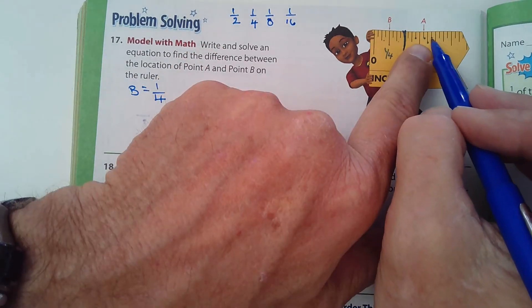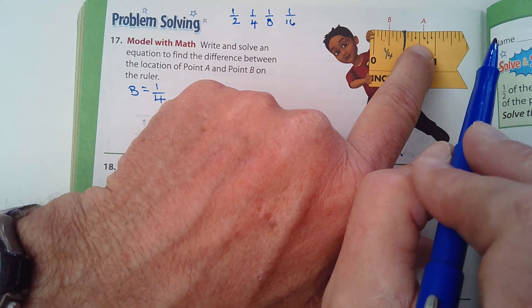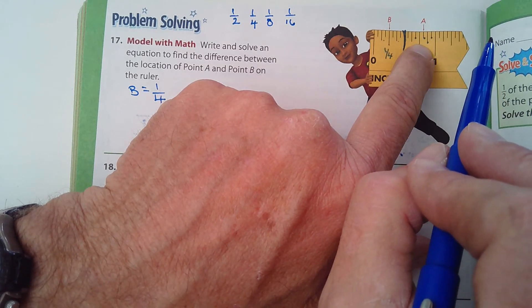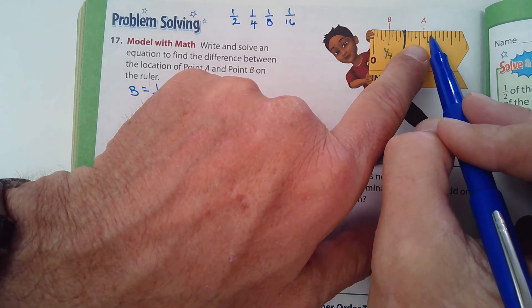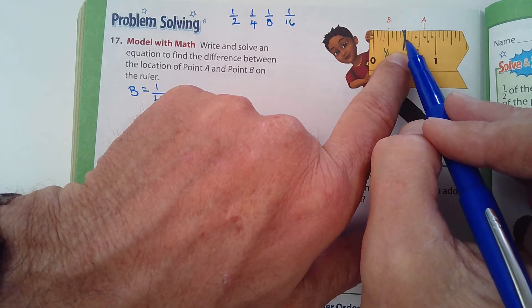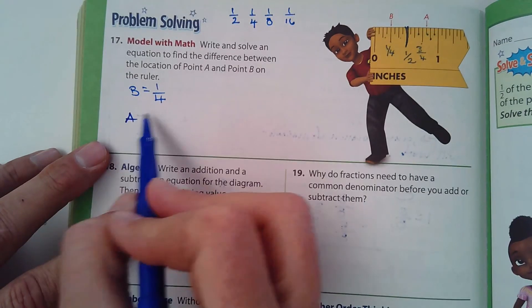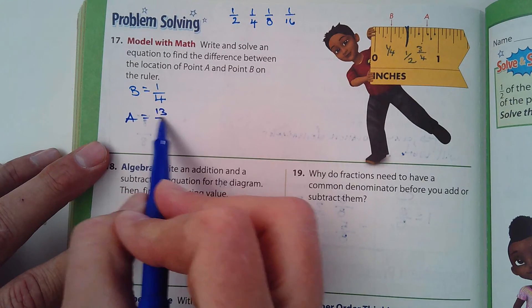And so these little tiny lines here, here, and here, and here, those are sixteenths. So how many sixteenths is A? It's almost hard for me to read. I think it's 13 sixteenths. So half would be eight, nine, 10, 11, 12. Yep. 13 sixteenths. So A equals 13 sixteenths.